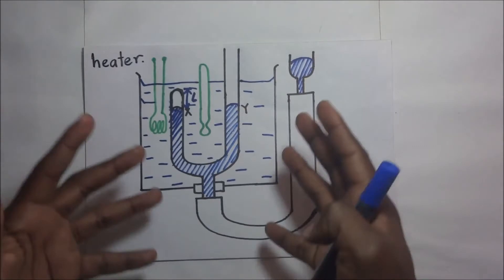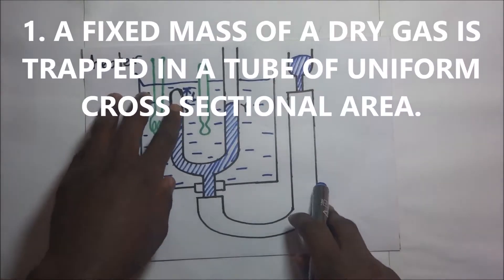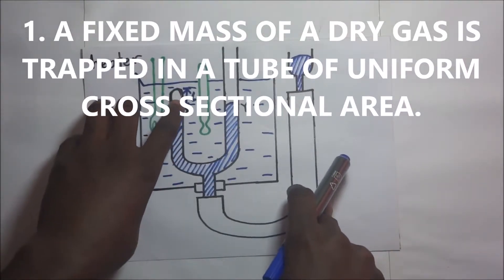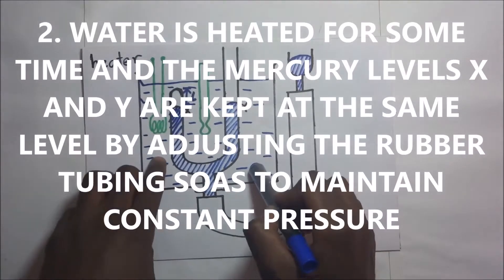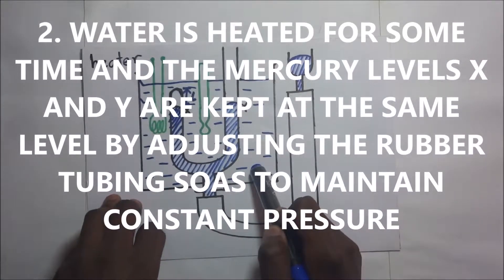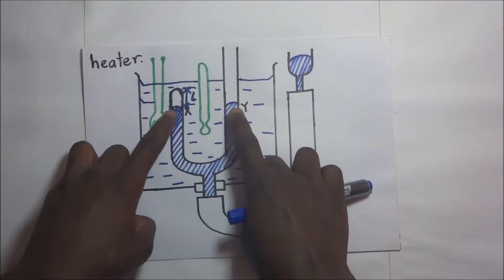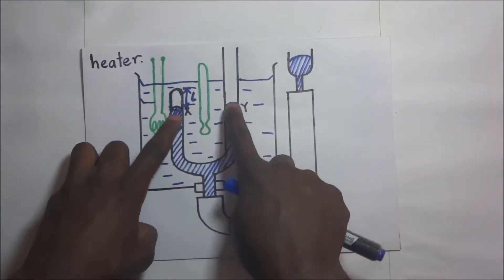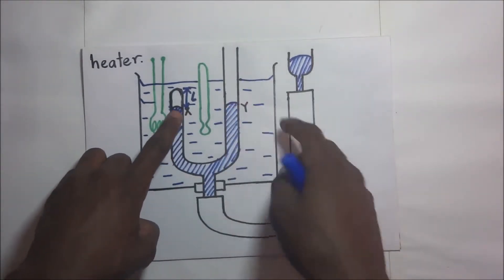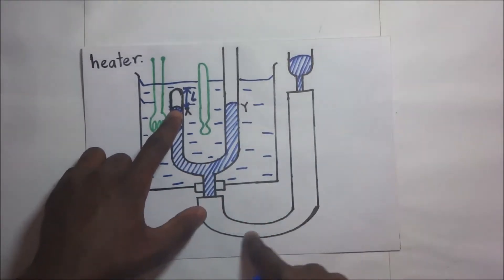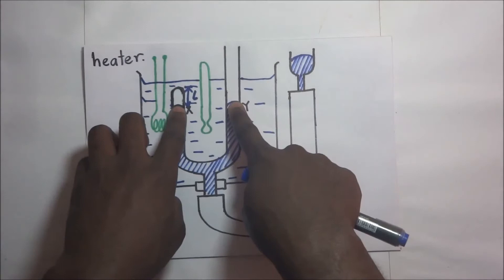In logical order, the procedures are: a fixed mass of dry gas is trapped in tube B, which has a uniform cross-sectional area. Water is heated and the mercury levels at X and Y are kept at the same level. They are kept equal because the condition is that pressure should be constant, and we maintain this by adjusting the rubber tubing.